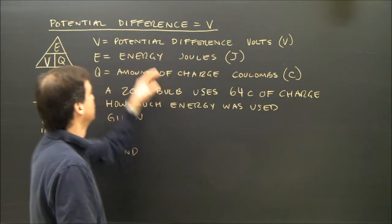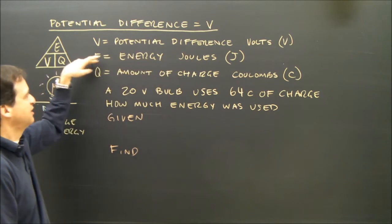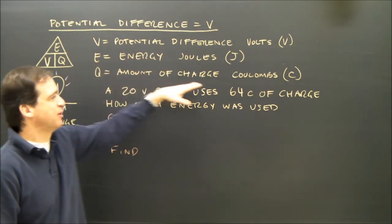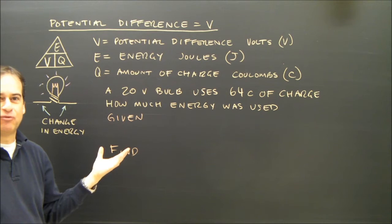Here are my variables. V is potential difference in volts, E is energy in joules, Q is the amount of charge in coulombs. Very simple formula.